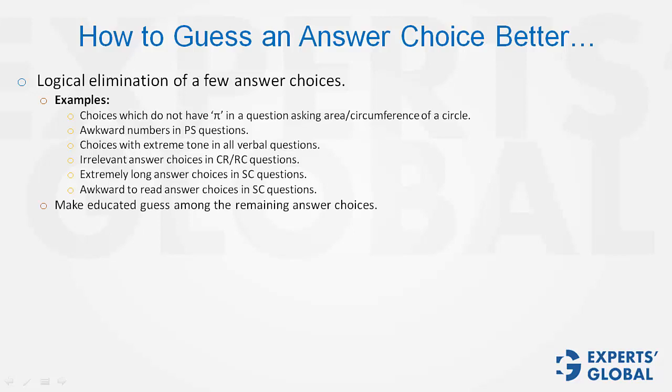Then out of the remaining answer choices, make an educated guess and move forward. Some more things: in DS questions, when you are not able to solve a question and you think the answer is E, it may actually be C. Remember, 'question cannot be answered' is different from 'I cannot answer the question.'